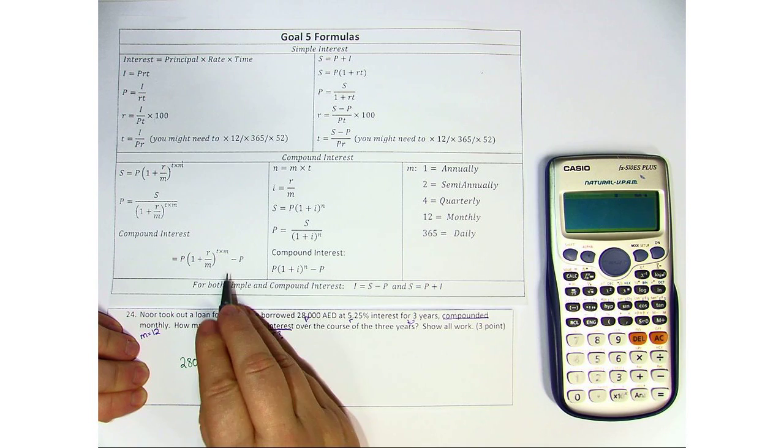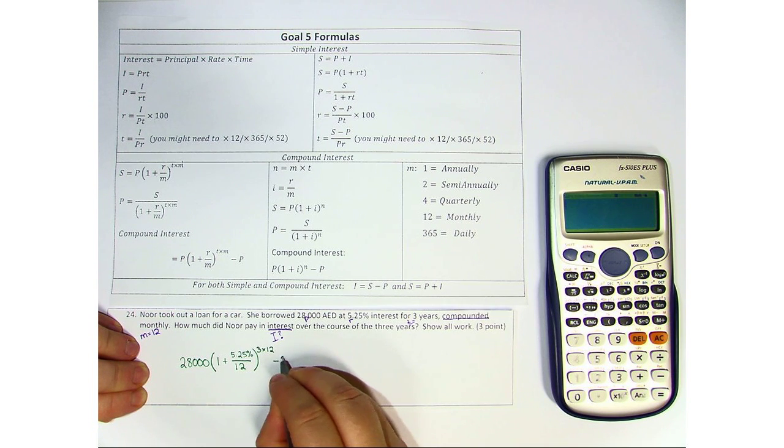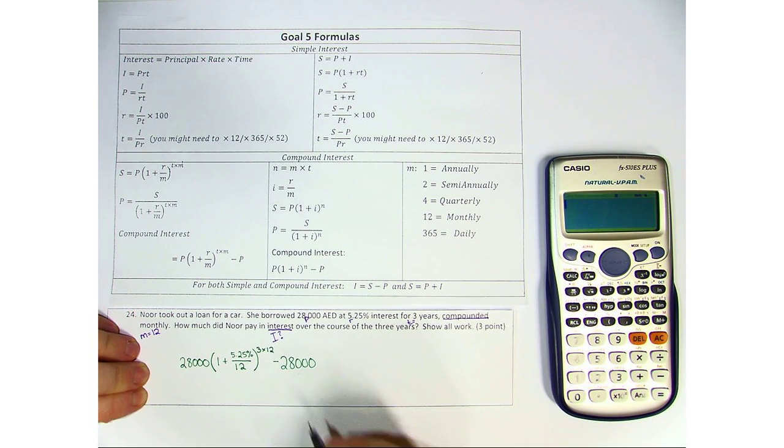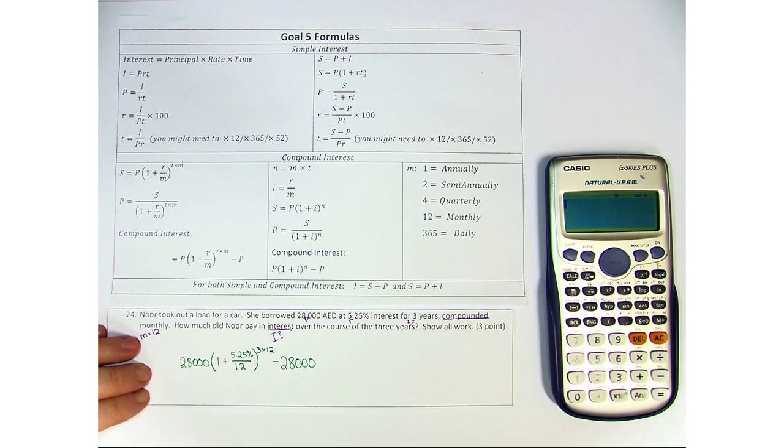Now we're looking for interest, so we have to finish by subtracting what she initially borrowed to find out how much extra she had to pay.